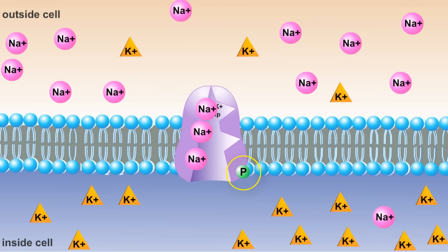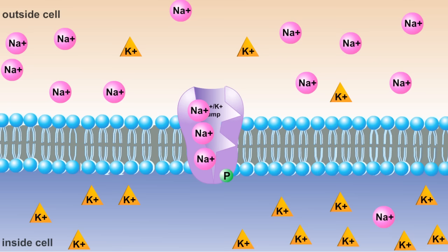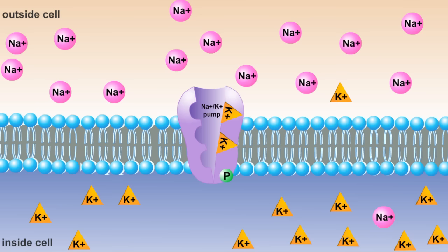This phosphate binds to a location on the exterior of the carrier protein, causing the protein to change shape. As the protein changes shape, the three sodium ions are released to the other side of the membrane.